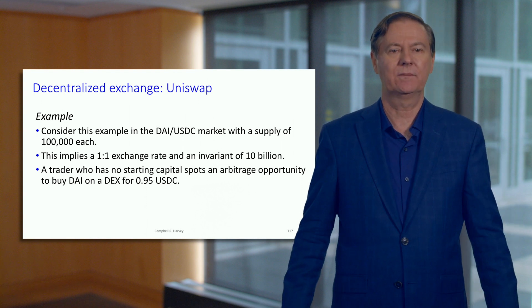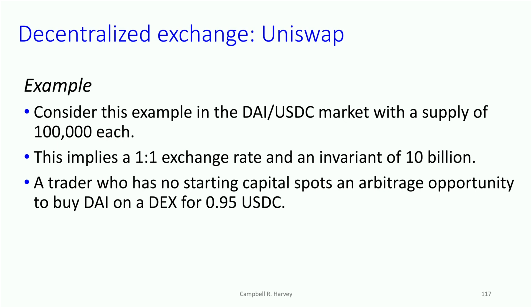Let's go through an example. We're talking about the DAI/USDC market — it's a high correlation market, not that much impermanent loss. We've got a supply of 100,000 each, so this is a large K and the invariant is quite large. Having 100,000 each means the exchange rate is one to one, and the invariant is 10 billion — that's 100,000 times 100,000.